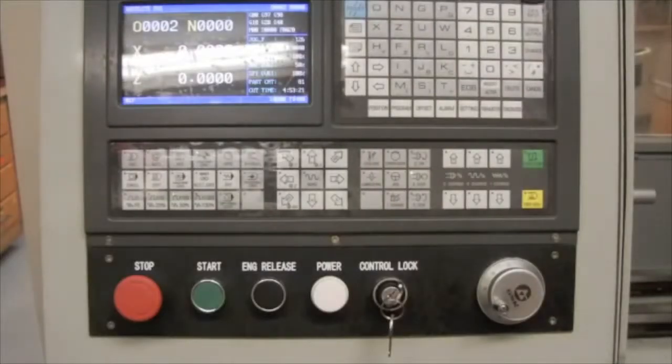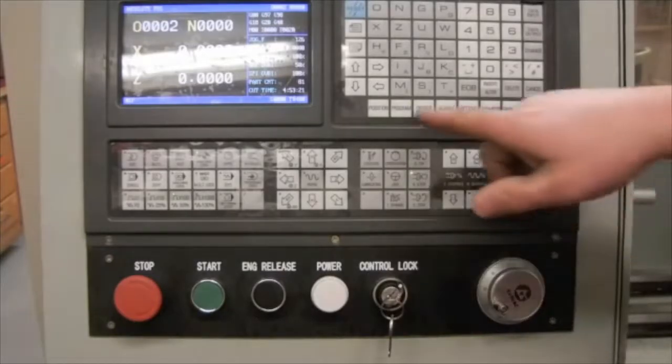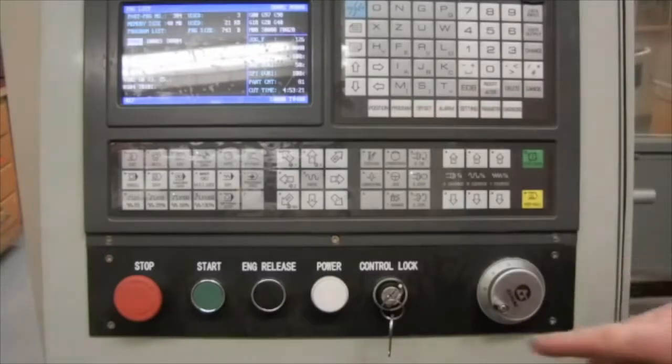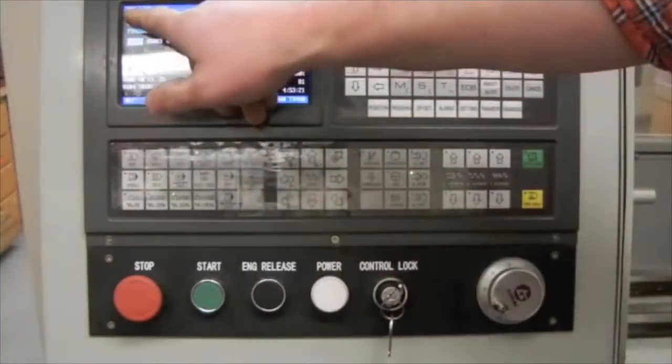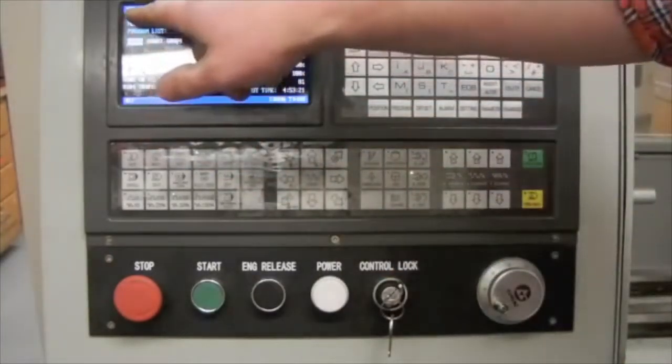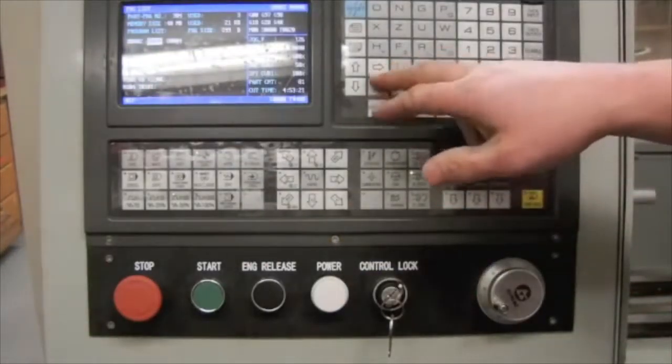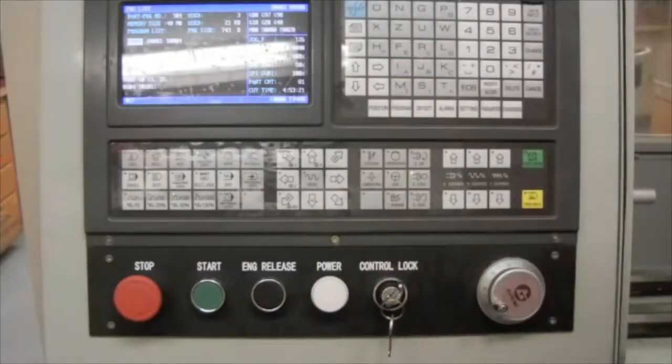My next step is I'm going to load in the program. I'm going to press the program button three times to enter what's called the program list window. The window is always listed in the top left hand corner of the screen. I'm now going to use the arrow keys to highlight the file that I'm going to load.